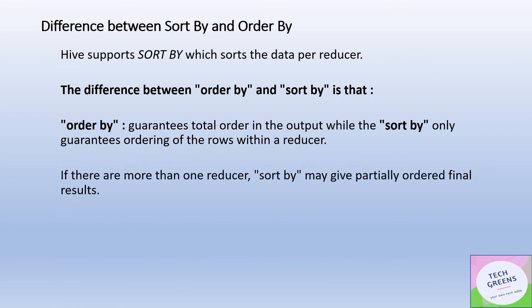Let's chart out the differences between the two clauses. ORDER BY provides complete ordering of the result set, while SORT BY provides sorting per reducer with no single final reducer to do complete ordering. Therefore, ORDER BY always guarantees absolute correct ordering, while SORT BY cannot guarantee that — it depends on the number of reducers. If there are more than one reducer, SORT BY will return a partially sorted set.